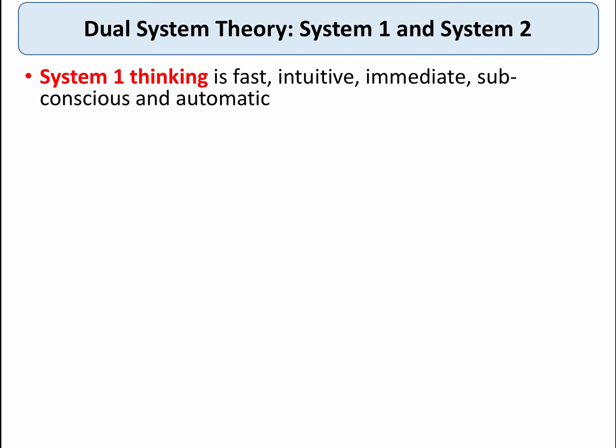System one thinking is when people think quickly, intuitively, immediately, almost subconsciously and automatically. So if I was to ask you the question what is two plus two, the answer should automatically come to mind. I could perhaps trigger an immediate emotional response by asking you to think of your favorite holiday destination or your favorite night out in the last year or so. System one thinking happens immediately.